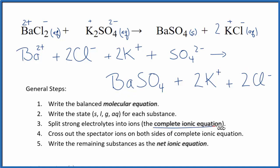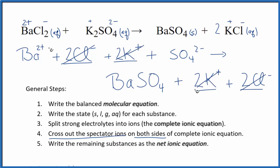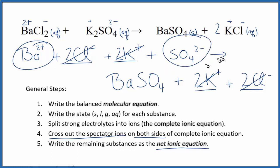Now that we have the complete ionic equation, we can cross out spectator ions. These are ions that appear on both sides — in the reactants and in the products. Ba²⁺ is not in the products, but 2Cl⁻ appears on both sides, so cross it out. 2K⁺ appears in the reactants and in the products, so cross it out. Everything else is unique, so our net ionic equation is Ba²⁺ plus SO₄²⁻ yields solid BaSO₄.